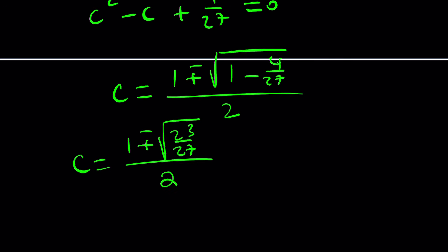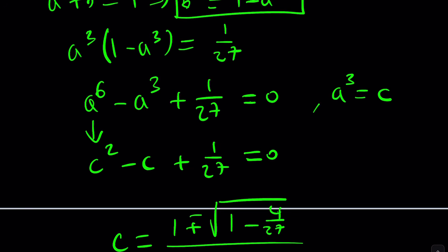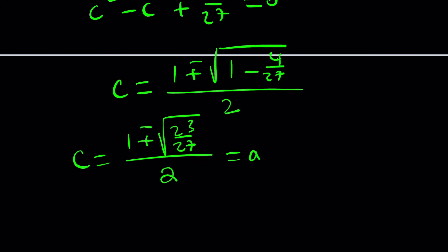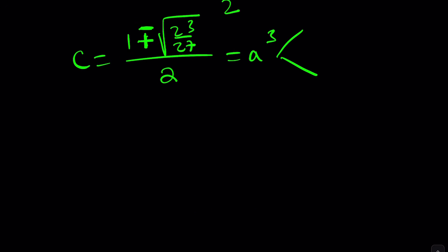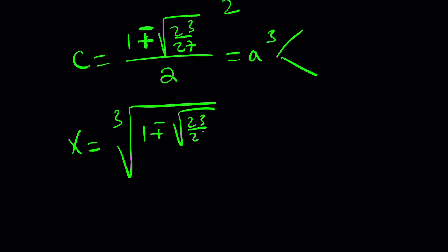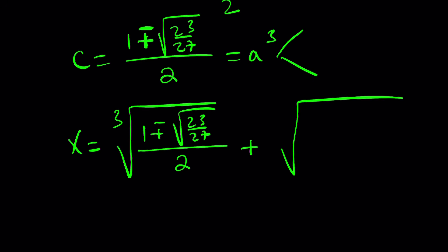From here you can find the solution. Since c equals a cubed and also b cubed, setting c equal to a cubed gives two results from the plus or minus — one is a and one is b. We don't really care which is which, because x equals a plus b. So the sum gives us the real solution: we take the cube roots of each value and add them. The expression for the real solution involves nested cube roots.